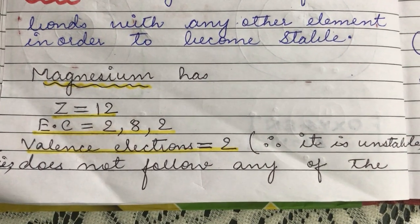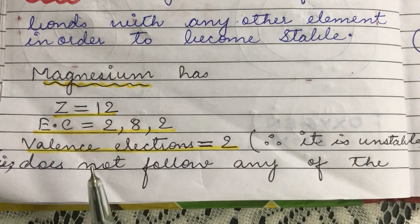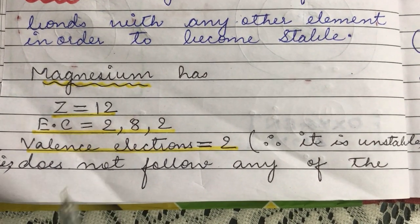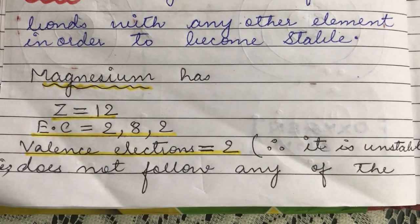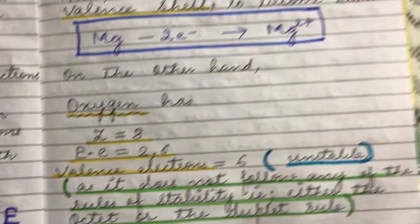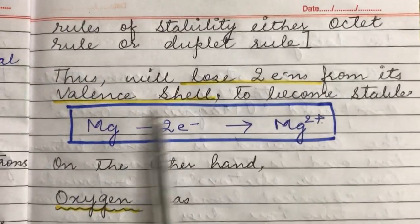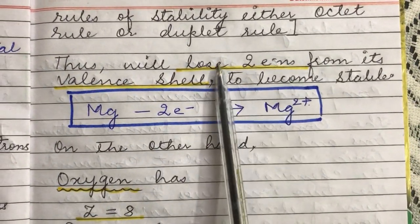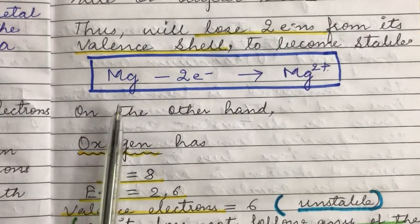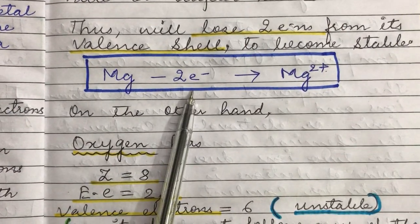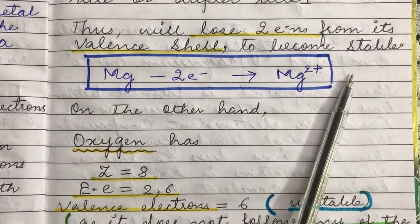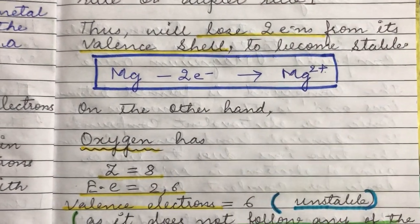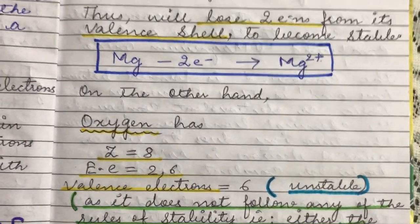Since magnesium follows neither the duplet rule nor the octet rule, it is not a stable atom. In order to attain stability, it will lose its two outermost electrons, forming an Mg²⁺ ion. We will understand this shortly using orbital structures.